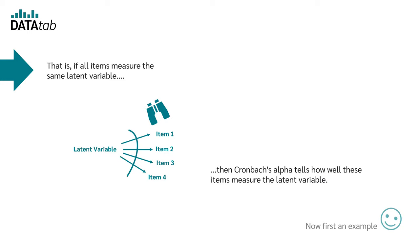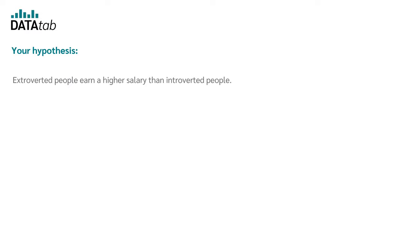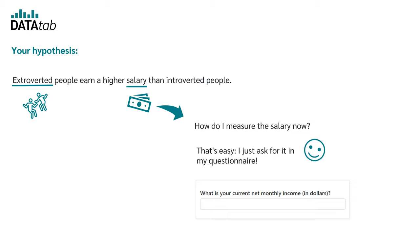Now, first an example. Our hypothesis is extroverted people earn a higher salary than introverted people. How do I measure the salary now? That's easy. I just ask for it in my questionnaire. So the question could be, what is your current net monthly income in dollars?